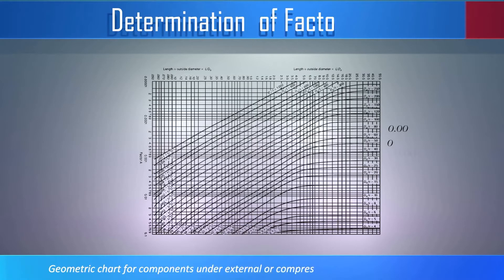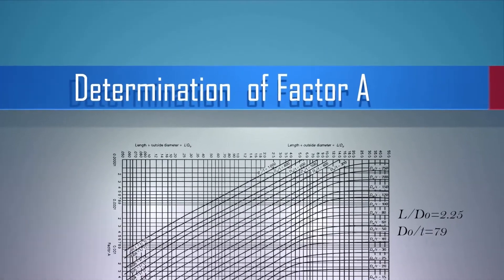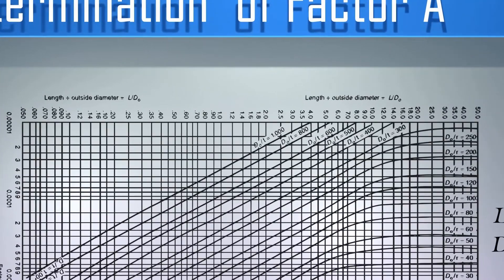Here is the geometric chart for components under external and compressive loading for all types of materials. L by D0 is 2.25 and D0 by T is 79, taken from the previous example. And here is the axis for L by D0.